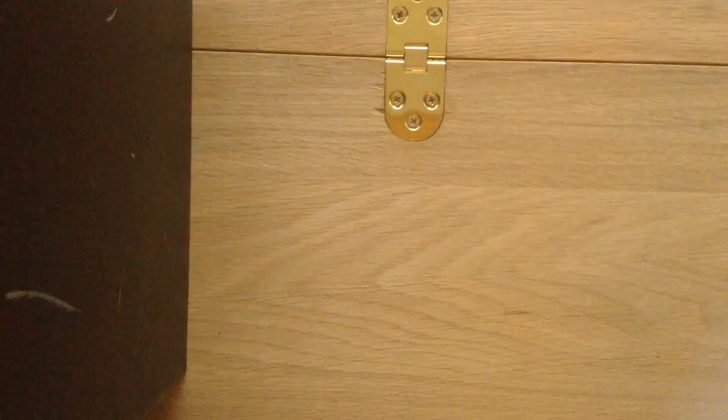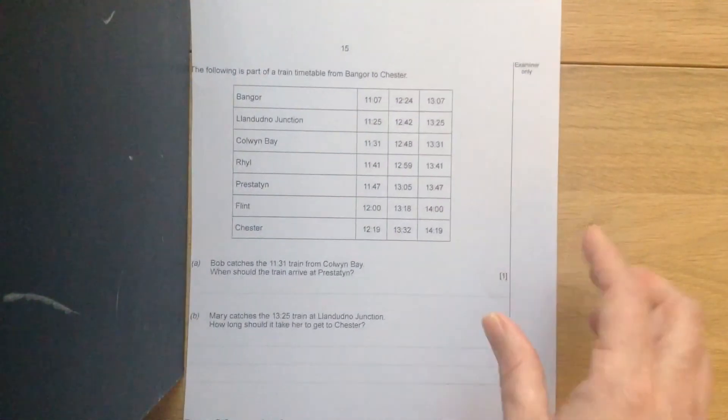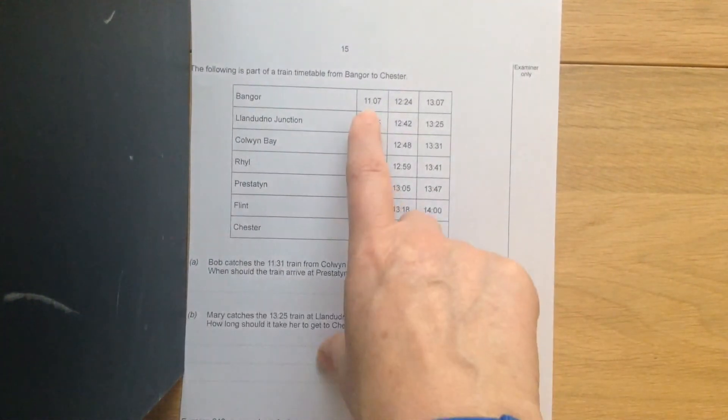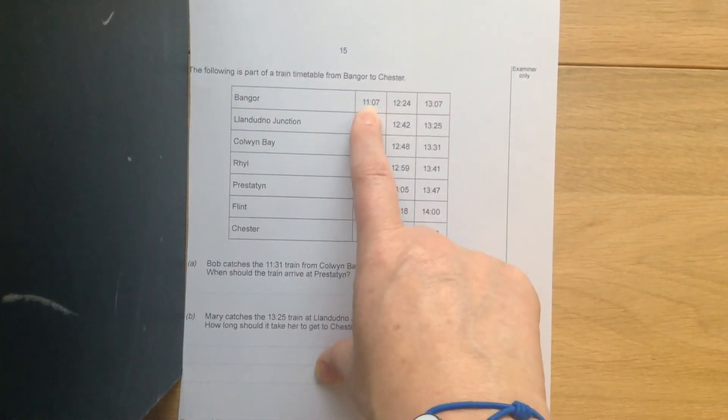Finally, timetables. We would call this train the 1107 from Banga.